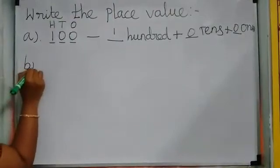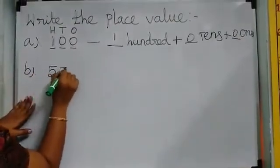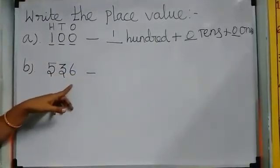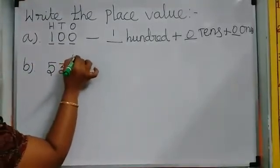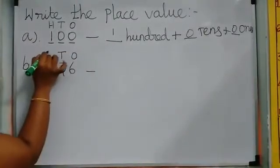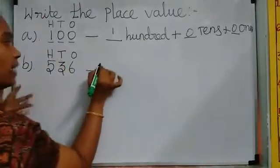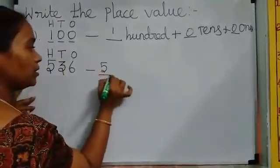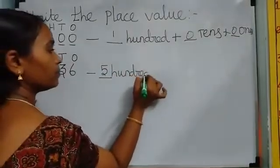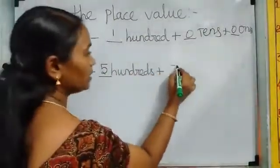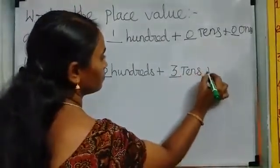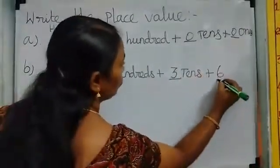The second one: which is the 1's place? 6 is the 1's place. 3 is the 10's place. 5 is the 100's place. How to write? 5 × 100's, 3 × 10's, 6 × 1's.